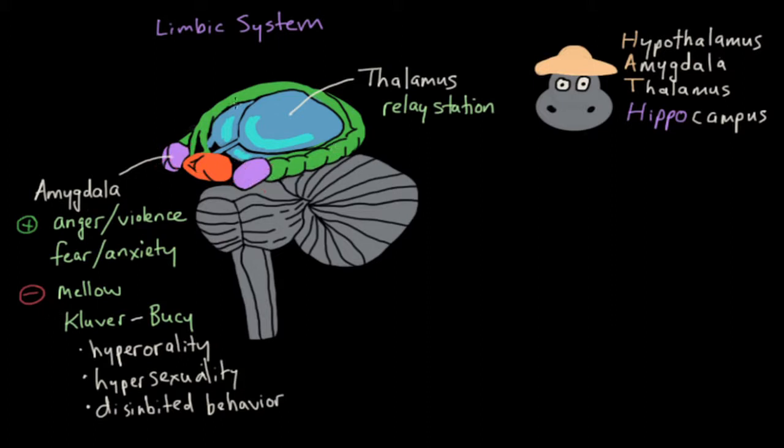Now this green structure here that you see curving around the thalamus is known as the hippocampus. And the hippocampus plays a key role in forming new memories. What it does is it helps to convert your short-term memory, abbreviated as STM, into your long-term memory.